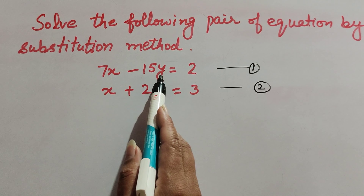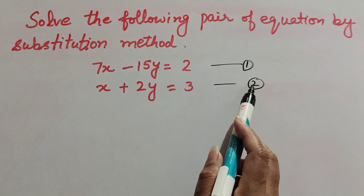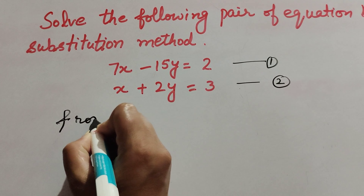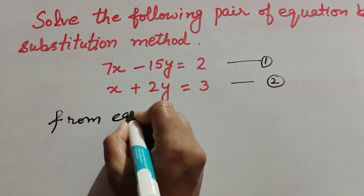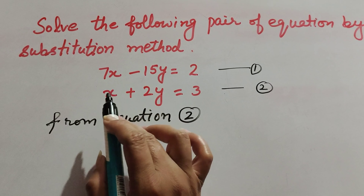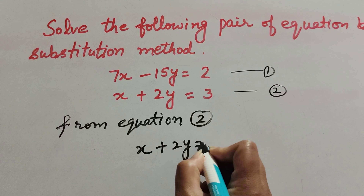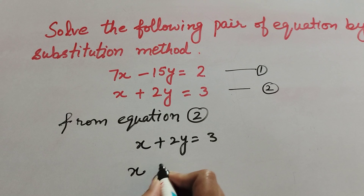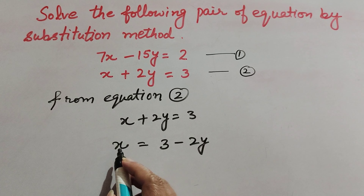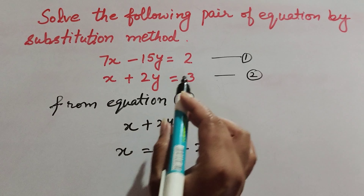We solve it by substitution method. Substitution method means we find the value of any variable x or y from equation 1 or 2. Here I am finding the value of x from equation number 2. Equation number 2 is x + 2y = 3. Transposing 2y to the right hand side, so x = 3 - 2y.